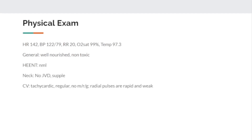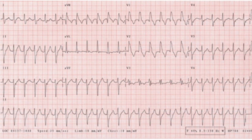Respiratory rate, sat, and temperature are okay. She is well-nourished and well-appearing. On cardiovascular exam, she is tachycardic with a regular rate, no murmurs, rubs, or gallops, and her radial pulses are rapid and weak. Lungs are clear, abdomen is normal, neuro exam is normal. Her EKG shows a broad complex tachycardia with a widened QRS complex — this is a wide complex tachycardia. There is a right bundle branch block and left axis deviation, comparing leads 1 and AVF.